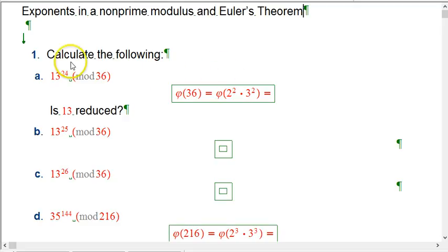We'll start out with 13 to the 24th mod 36. Okay, so 36 is not prime, so you can't just directly use Fermat, but we should hopefully be able to use Euler. First thing I would do in all these problems is calculate phi of the mod, the Totient function.